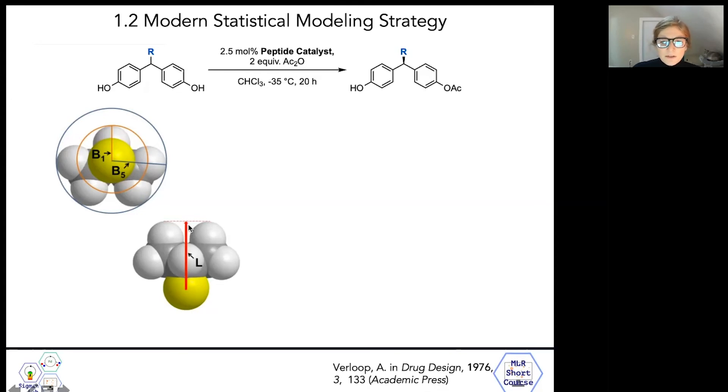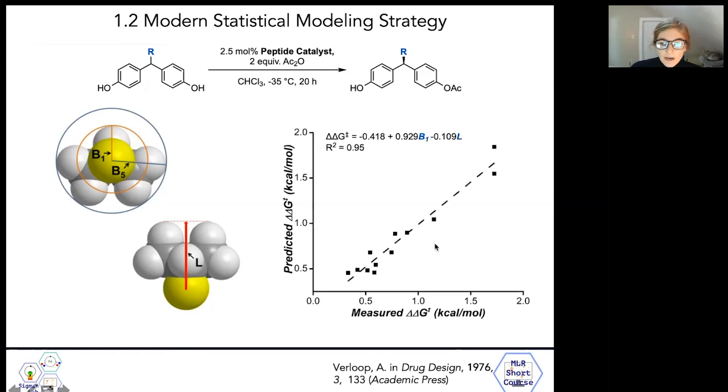And while no single Sterimol parameter was highly correlated with the observed enantioselectivities for this desymmetrization, Harper and Bess demonstrated that the minimum width and the length parameters, when taken together, furnished an adequate model of the observed selectivity of this transformation. They were able to assess the effects of both parameters at one time by performing multivariate linear least squares regression. We still use a very similar strategy in the group today to build multivariate linear regression models, and the topic of linear least squares will once again be covered in depth in module four.